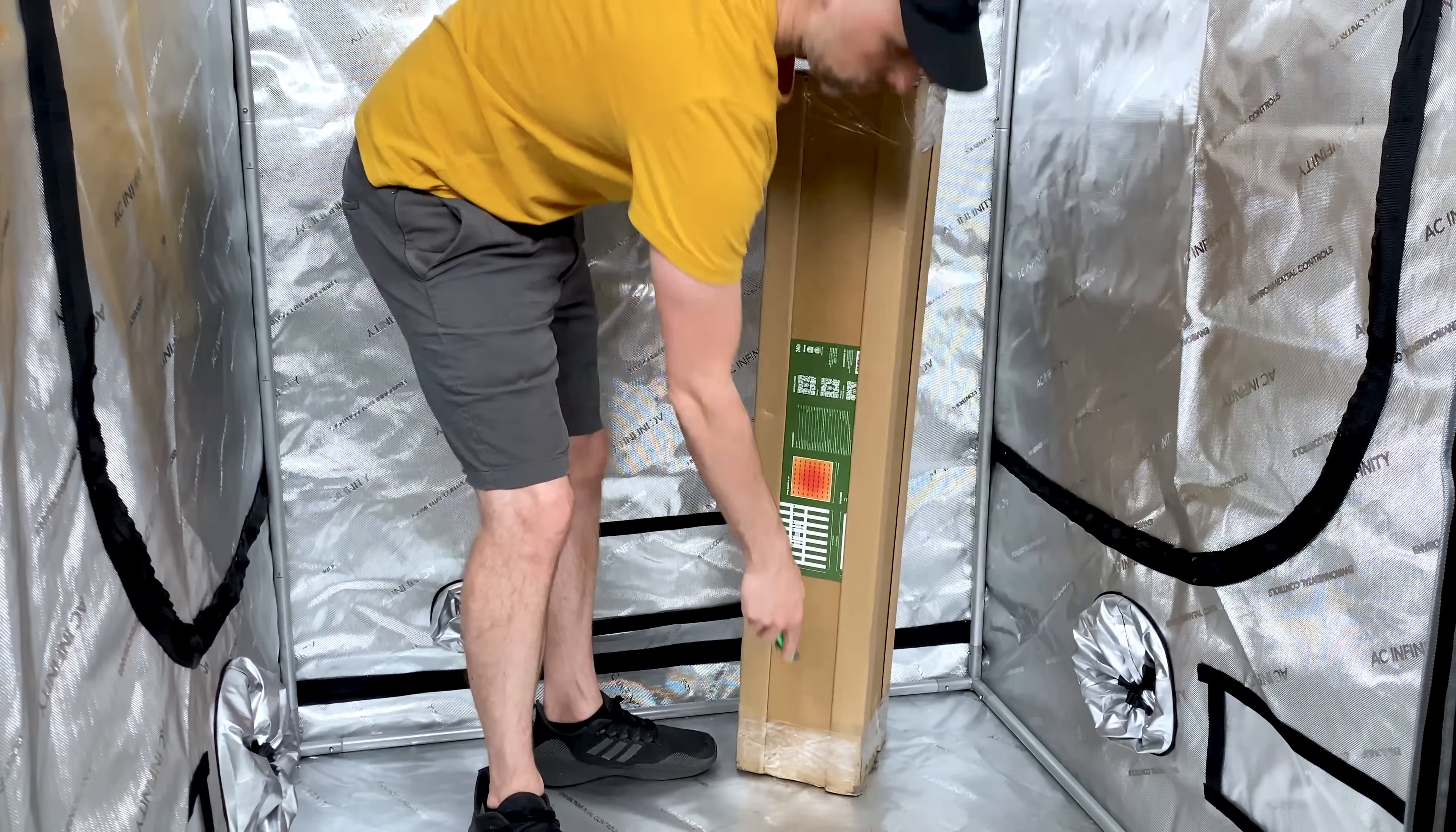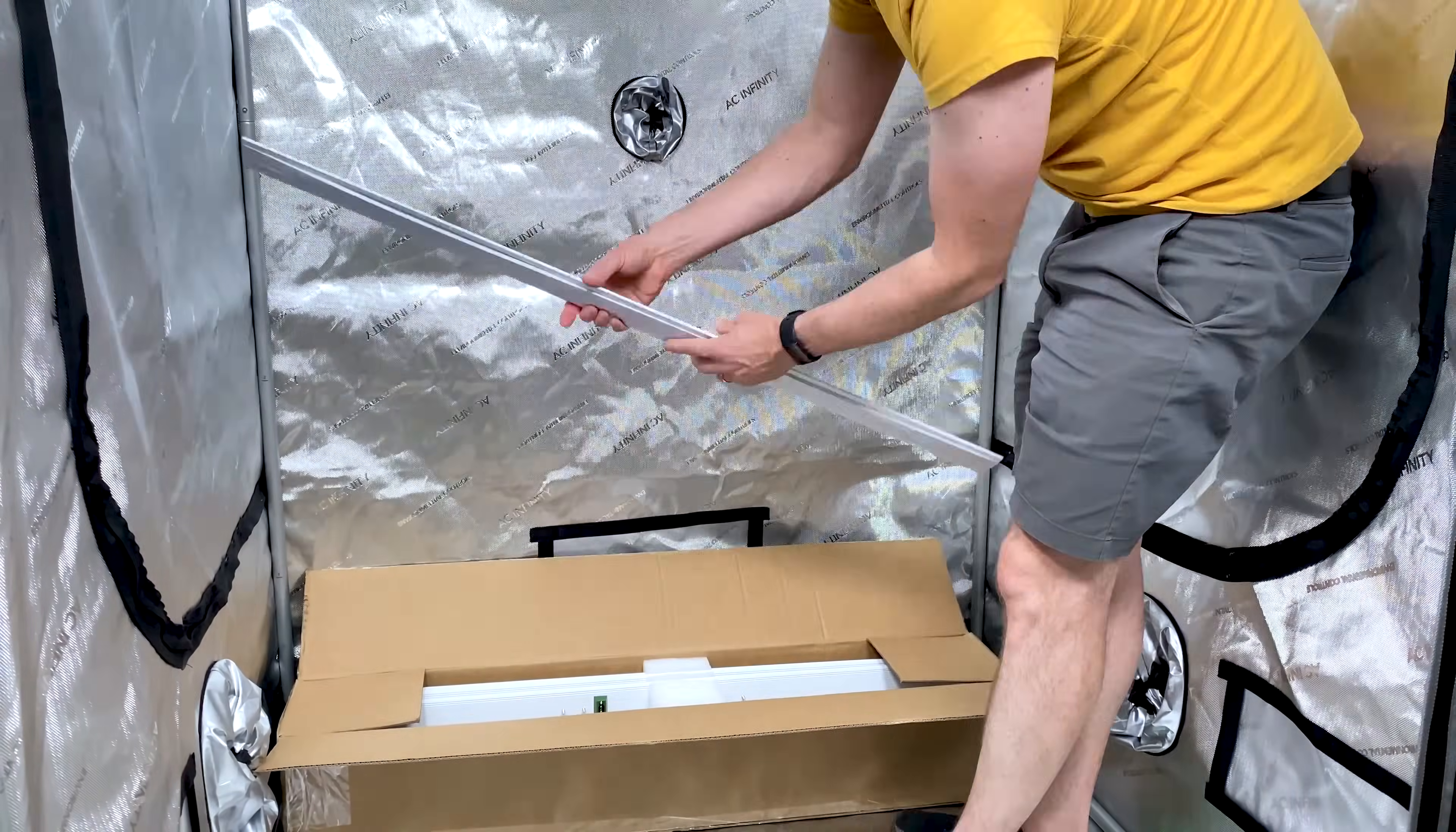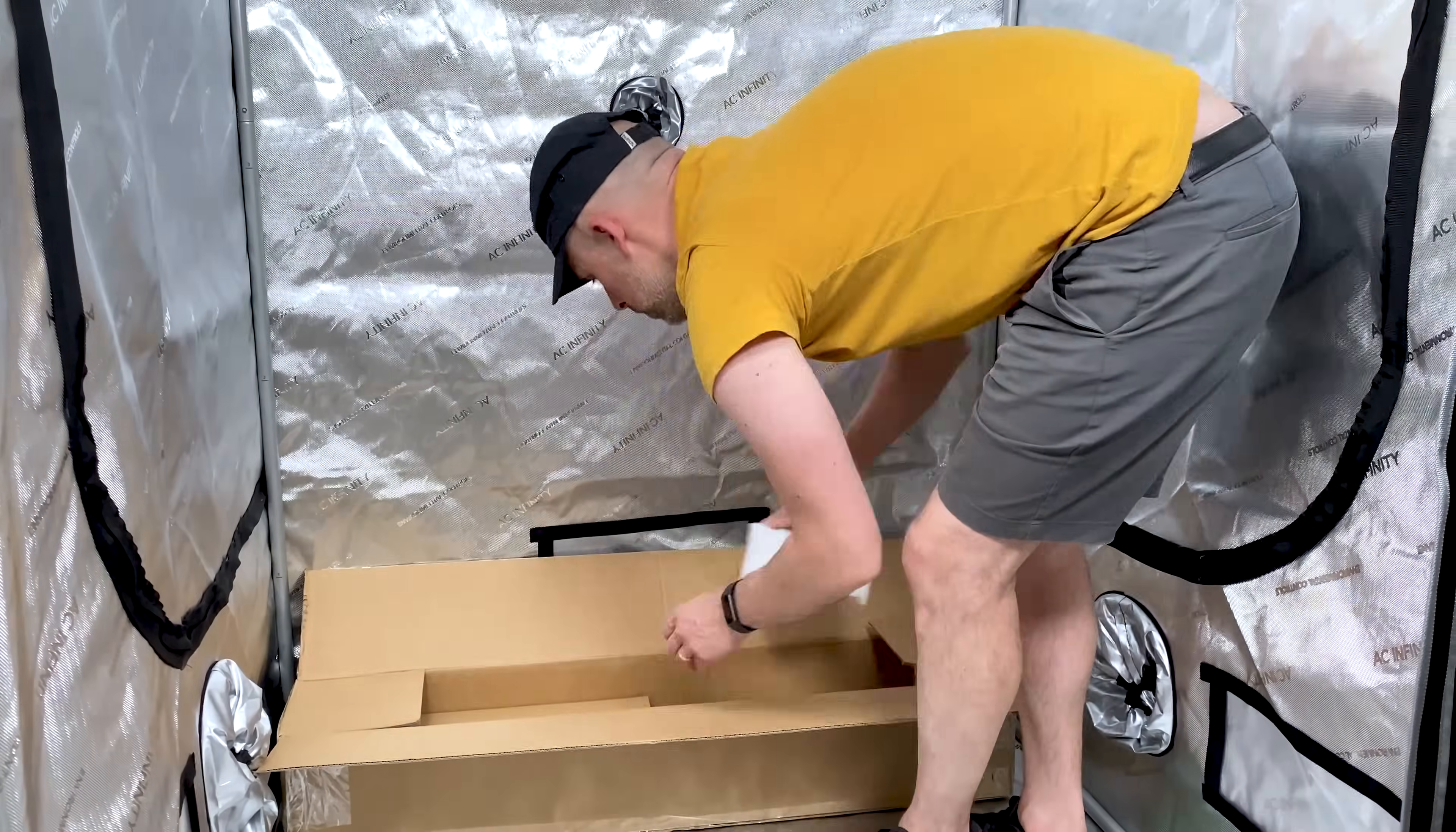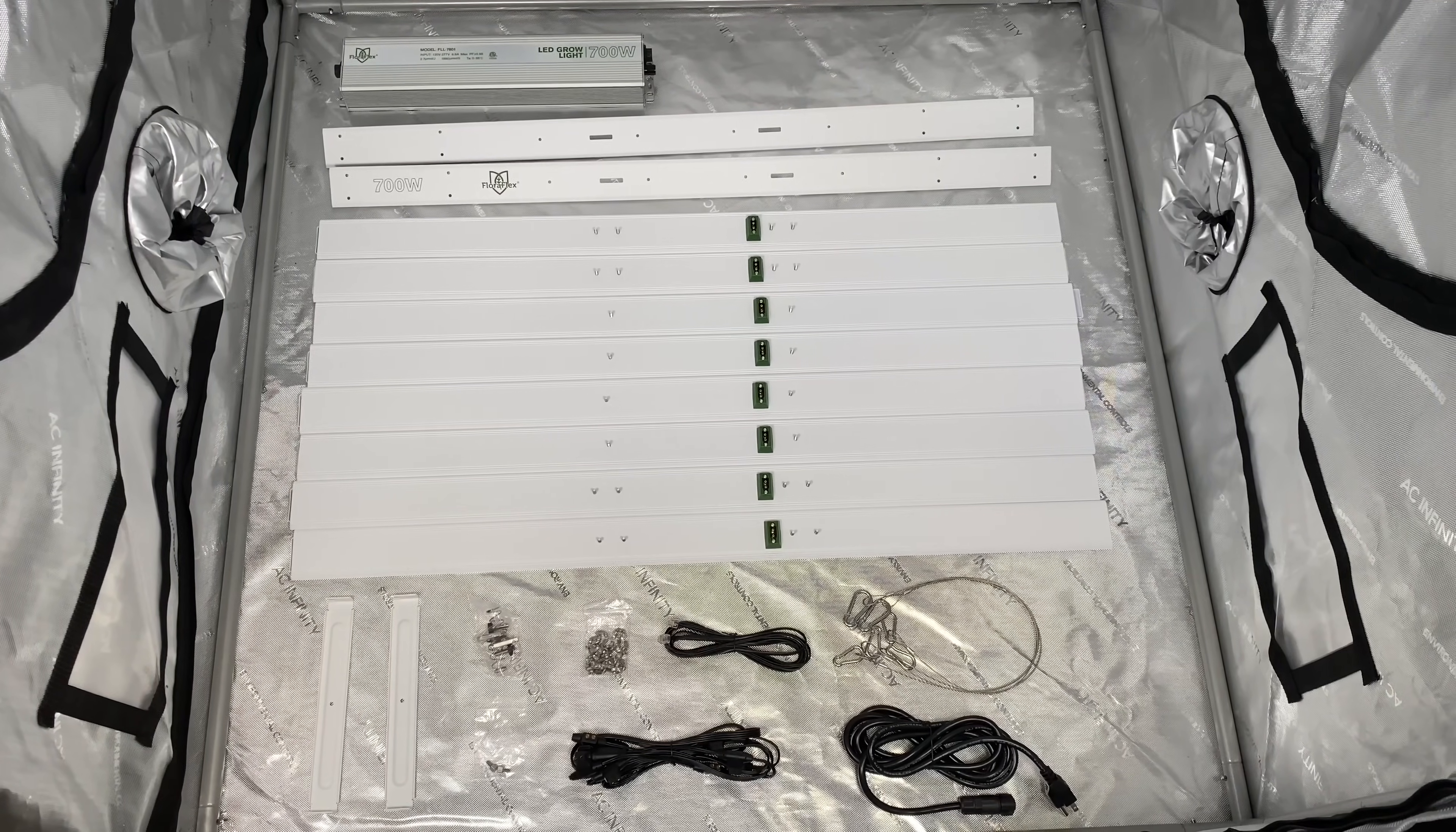The FloraFlex 700W arrives in a compact box weighing just 15.4 pounds. Inside you'll find everything needed to get the light up and running: eight light bars, structure bars, a power supply, cables, and all necessary hardware.